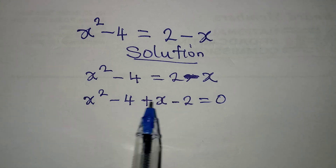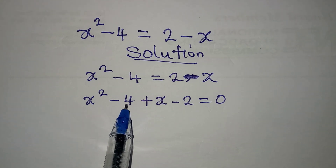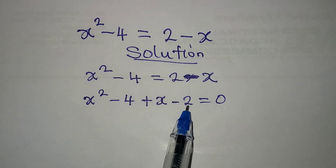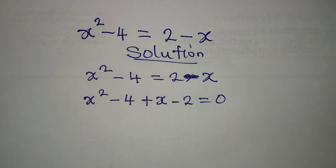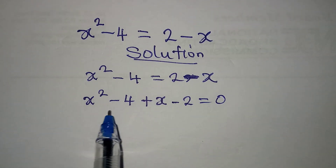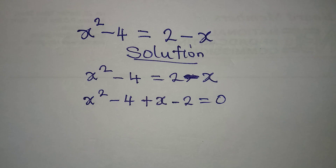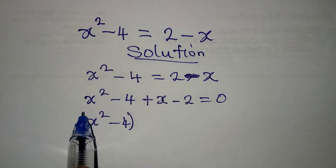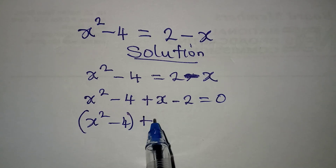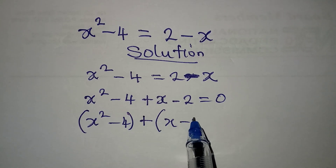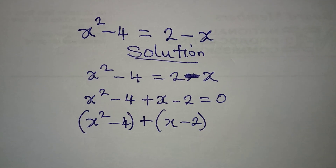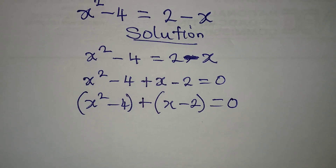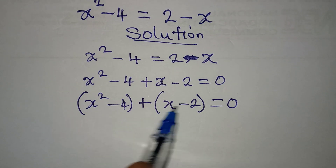You can decide to collect like terms — take minus 4 and 2 — but there's no need for that. We can simply group and factorize. This is x squared minus 4 in a group, then here we have plus x minus 2, everything equals 0.